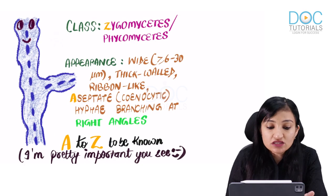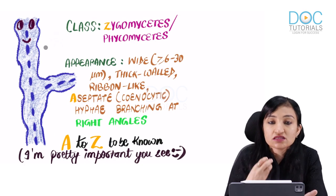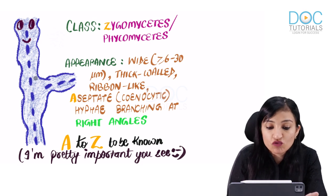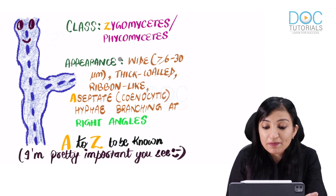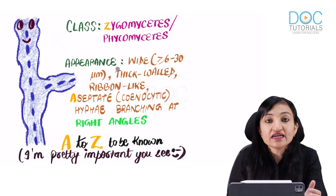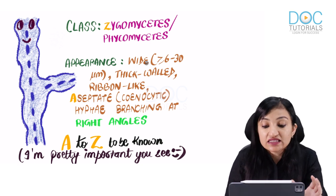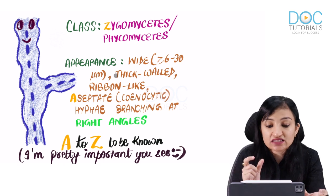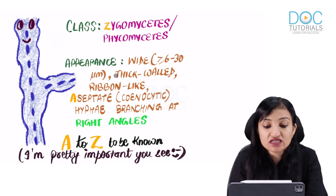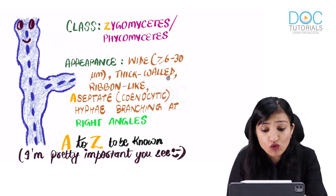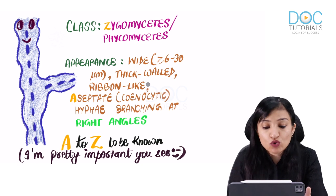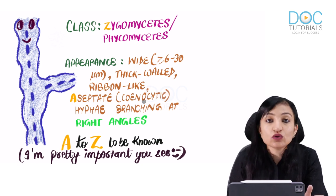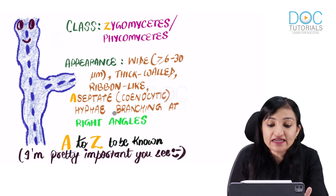These aseptate or cenocytic filamentous fungi are wide — 6 to 30 or more microns in width — thick-walled, and irregular, broad, ribbon-like with aseptate or cenocytic hyphae branching at right angles.